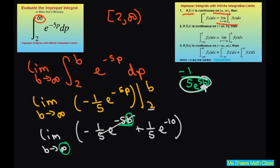So this is just going to go to zero plus and this is just a constant. So we have 1 fifth e to the negative 10th power.